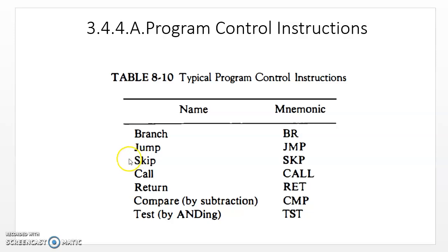Now, for skip instructions, we had seen 7 different types previously: ISZ, skip on input flag, skip on output flag, and others. The common thing in all these instructions is that the next instruction to be executed will be skipped. This is done by simply incrementing the program counter. It happens whenever the condition is satisfied — if the condition is satisfied, the next instruction will be skipped; otherwise it will get executed.